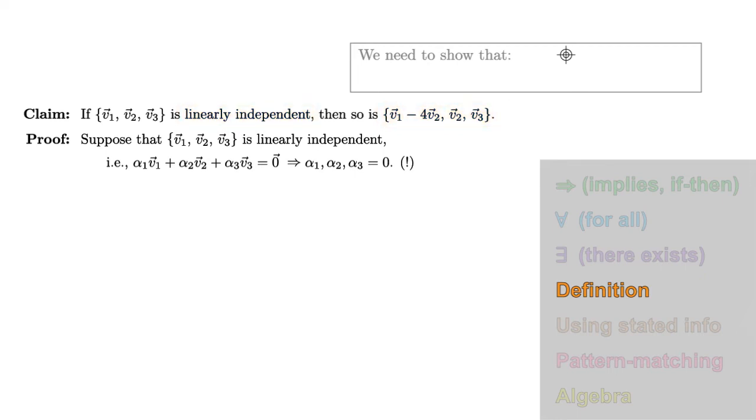In symbols, beta 1 v1 minus 4v2 plus beta 2 v2 plus beta 3 v3 equals 0. This is the form of a linear relation on our other collection. We're using betas because the coefficients for this linear relation aren't the same as those in our other definition, as they correspond to a different collection of vectors. This implies that beta 1, beta 2, and beta 3 are all 0. Any such linear relation must be trivial. Again, the entire implies statement is the definition of linear independence.